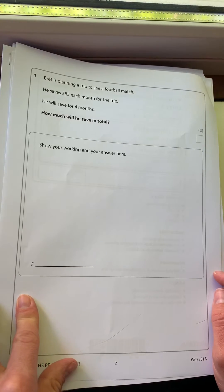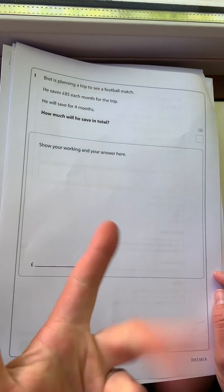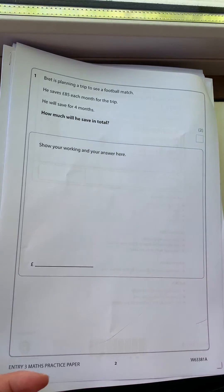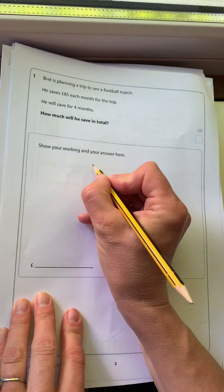So a couple of ways you could do it. You could add 85, 85, 85, and 85, but probably quicker to multiply 85 by 4.